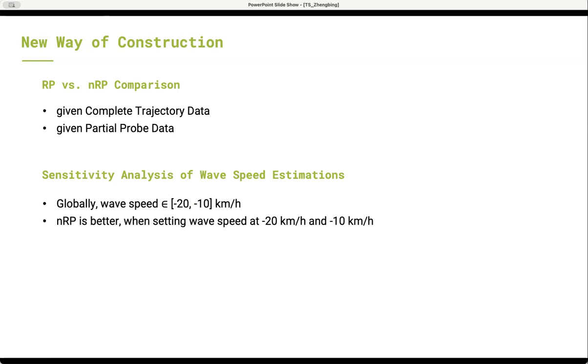One of the tests is under the condition given 100% traffic information, that is, we have complete trajectory data. Another test is under the condition given partial probe data. It is like the data collected by using floating cars and we only have the sample data for certain vehicles and at certain time. The results in all the conditions show that the proposed NRP-based time-space construction outperforms the traditional RP-based method using the metric of average travel time.